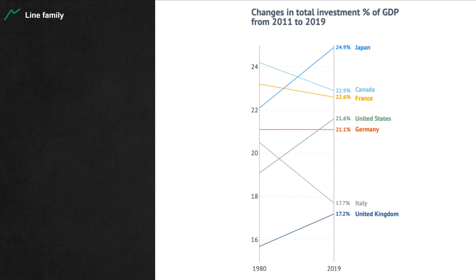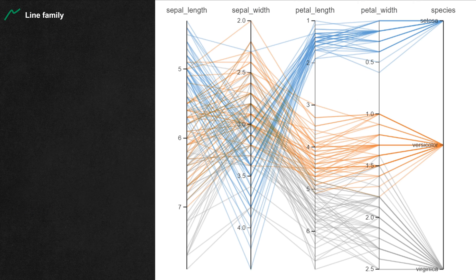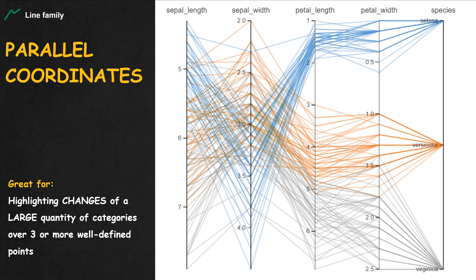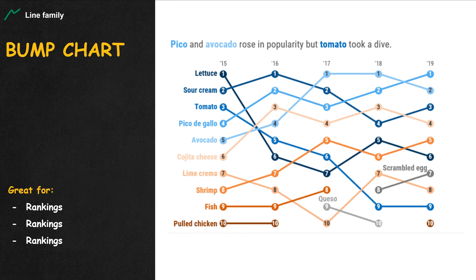When a line chart has only two values, it creates a unique slope for each line — people call it the slope chart. When a slope chart has a few more slopes but not too many, we have parallel coordinates. When parallel coordinates is used to show rankings over time, it's called a bump chart.